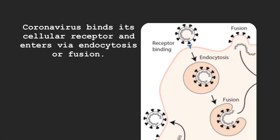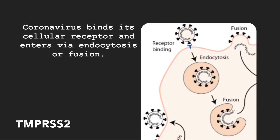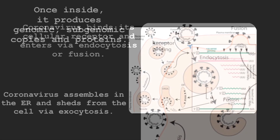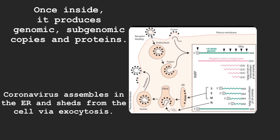Let's talk about the life cycle. Coronavirus binds its cellular receptor and enters via endocytosis or fusion. The receptor for COVID-19 coronavirus is ACE2, and entry into the cell requires priming of the S protein with the cellular protease TMPRSS2. Once inside, the RNA genome produces genomic and subgenomic copies. Some of these are used as templates to make more proteins, while a full-length genome is made to be packaged into new virions. Coronavirus assembles in the endoplasmic reticulum and sheds from the cell via exocytosis, resulting in new virions.